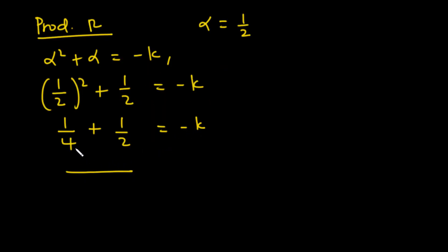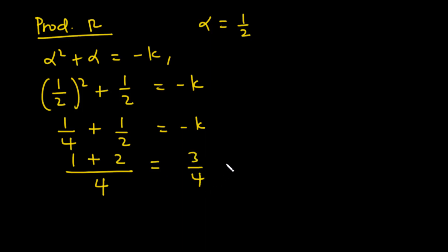Finding the LCM of 4 and 2, which is 4: 1 over 4 plus 2 over 4 gives us 3 over 4. So 3 over 4 equals negative k, which means k equals negative 3 over 4. Therefore, the value of k is negative 3 over 4.